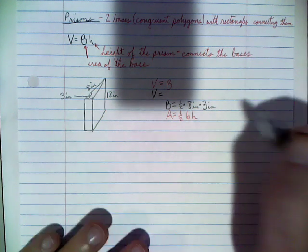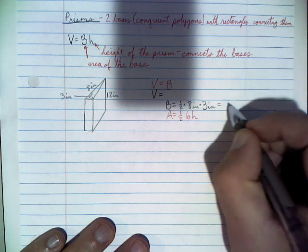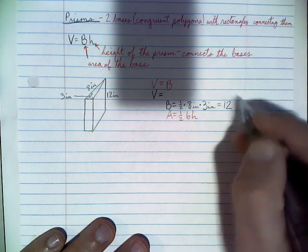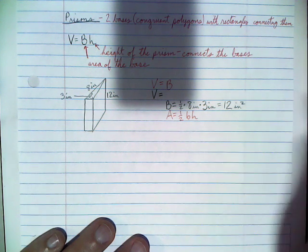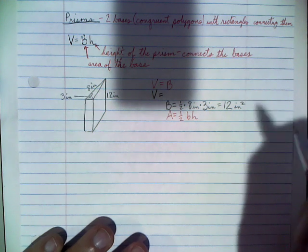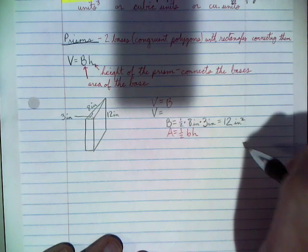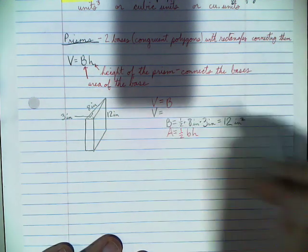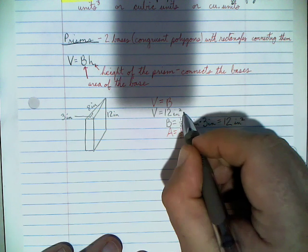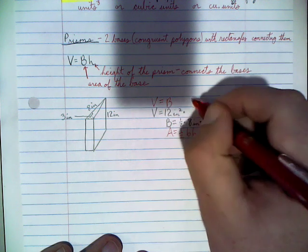Simplifying: half of 8 is 4, times 3 is 12. Inches times inches makes square inches. So the area of the base B is 12 square inches. Now that we know B, we come back to the full formula: V equals B times h, so V equals 12 square inches times h.